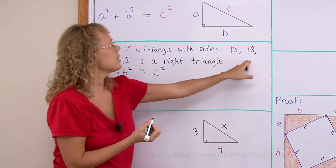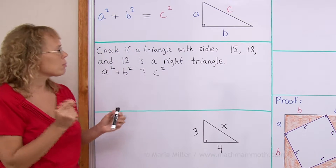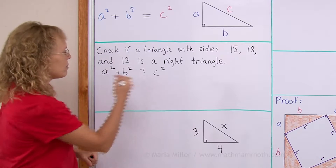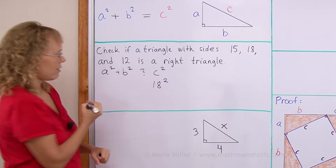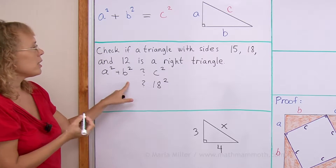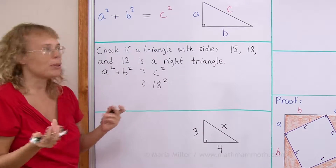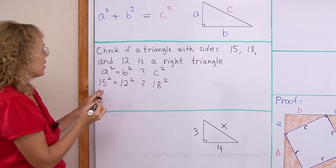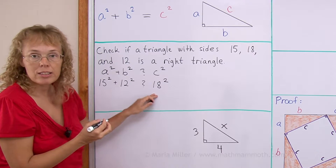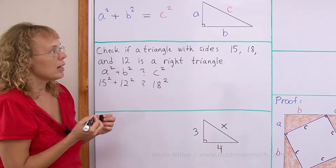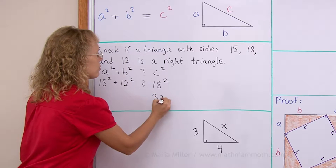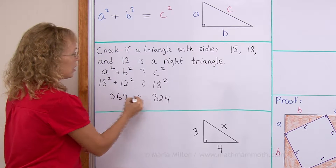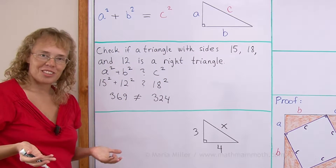In this triangle with sides 15, 18, and 12, c is always the longest side, so 18 must be c. I write 18 squared here. Then a and b don't matter which is which, so I write 15 squared plus 12 squared. Calculating: 18 squared is 324, and 15 squared plus 12 squared is 369. They are not equal, so a triangle with those side lengths is not a right triangle.